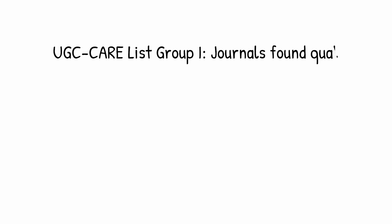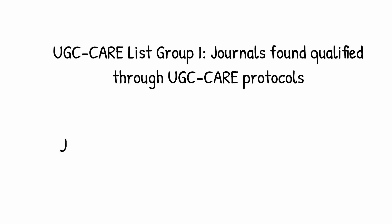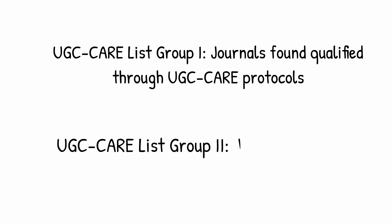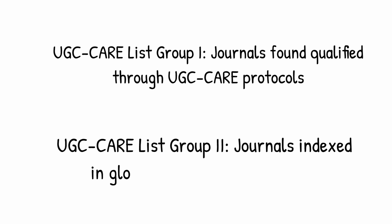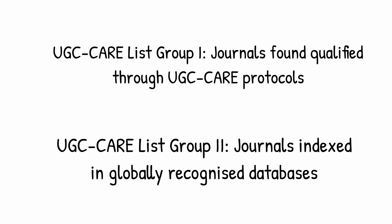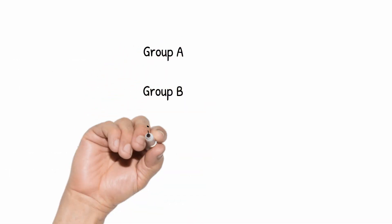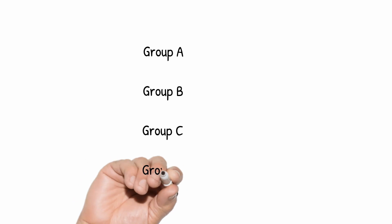What is the UGC CARE list of journals? The journals under this UGC CARE list are considered to be quality journals recognized by the consortium. It is majorly divided into two groups: journals found qualified through UGC CARE protocols are called UGC CARE List Group 1, and journals indexed in globally recognized databases such as Scopus and Web of Science are called UGC CARE List Group 2.